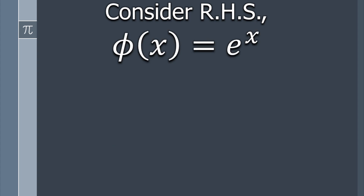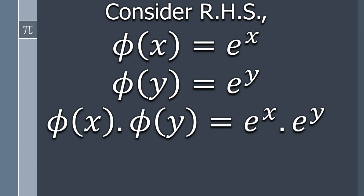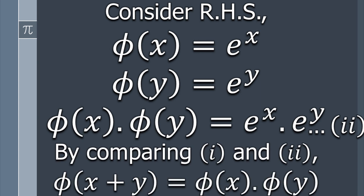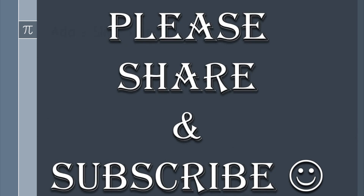Now consider the right-hand side: φ(x) = eˣ and φ(y) = e^y. By the definition of homomorphism, we find the product φ(x) × φ(y) = eˣ × e^y, which is equation number two. Comparing equation one and equation two, we get φ(x + y) = φ(x) × φ(y), which proves that φ is a group homomorphism. Please share this video if you find it helpful — see you in the next one, take care.